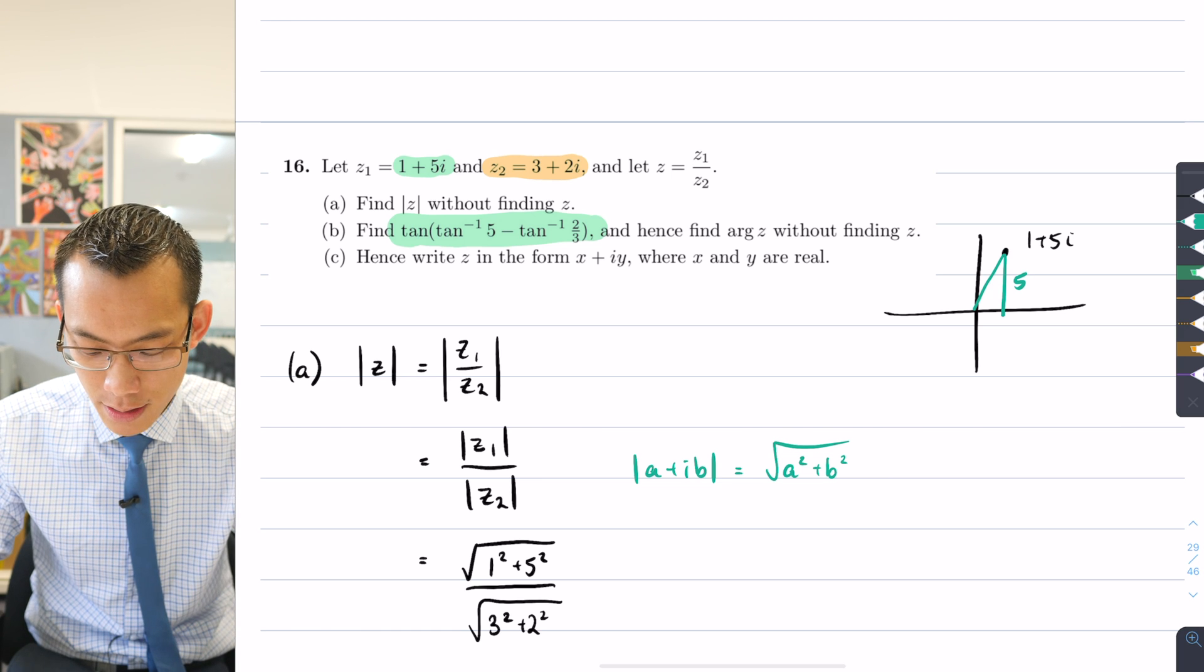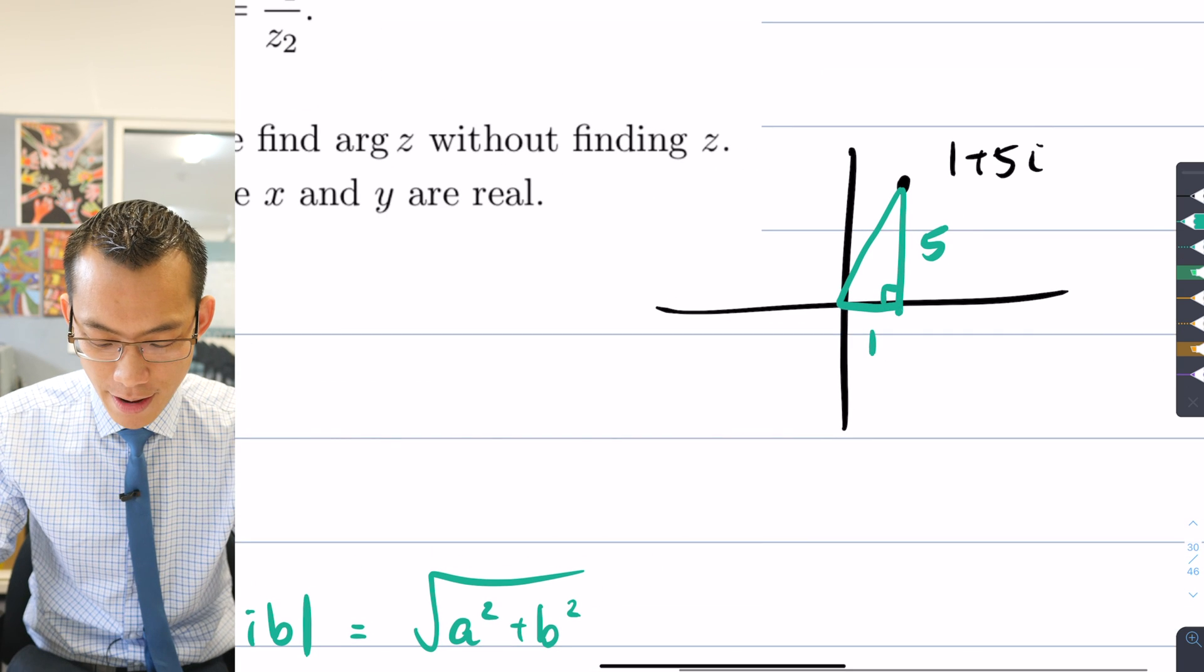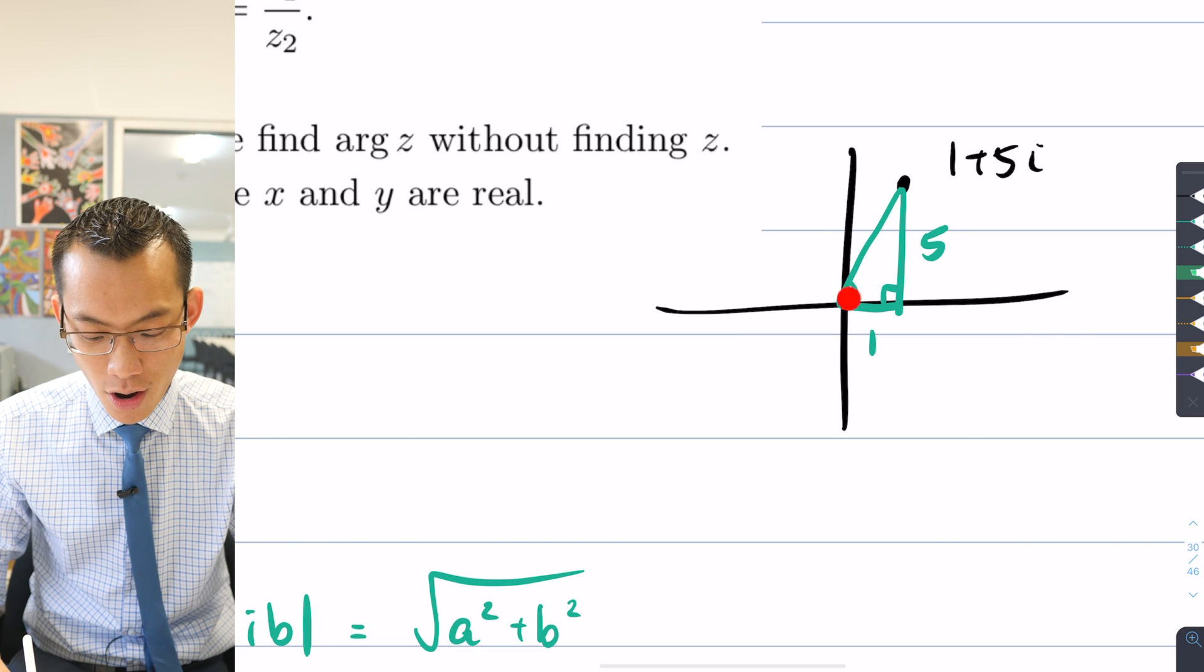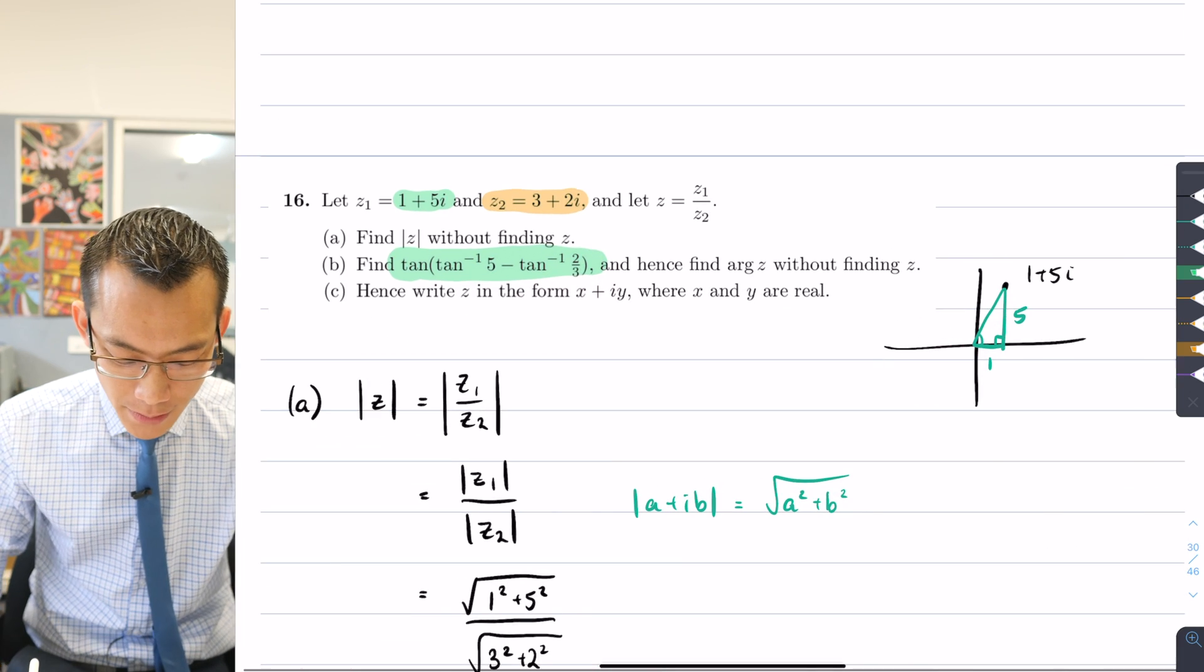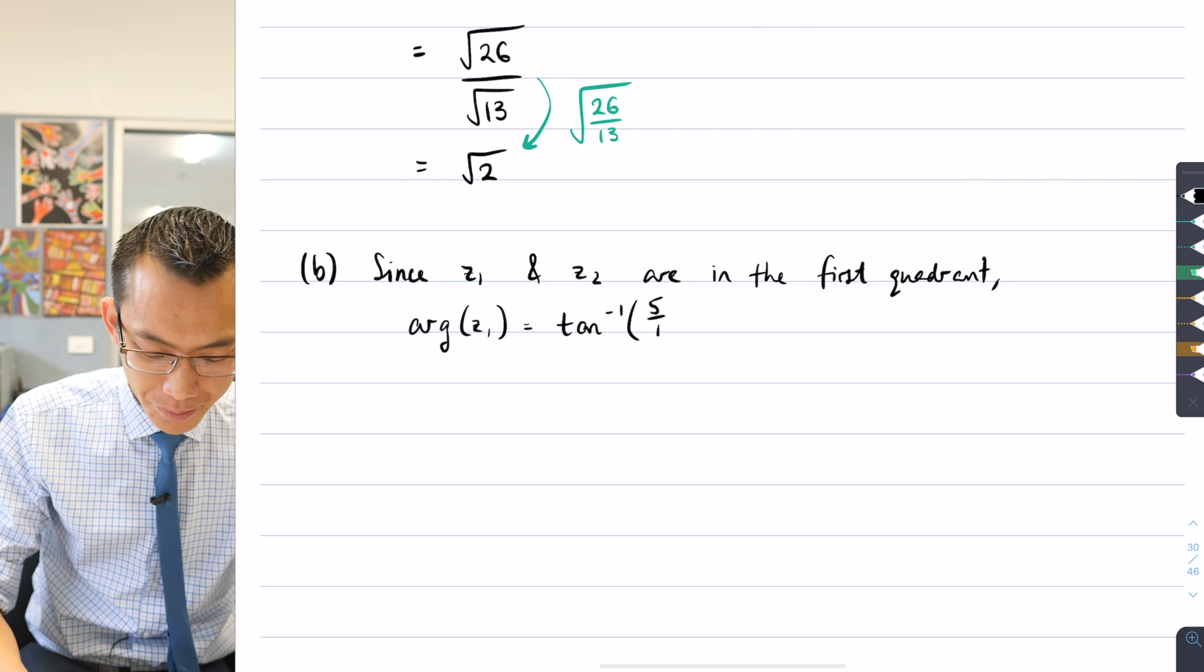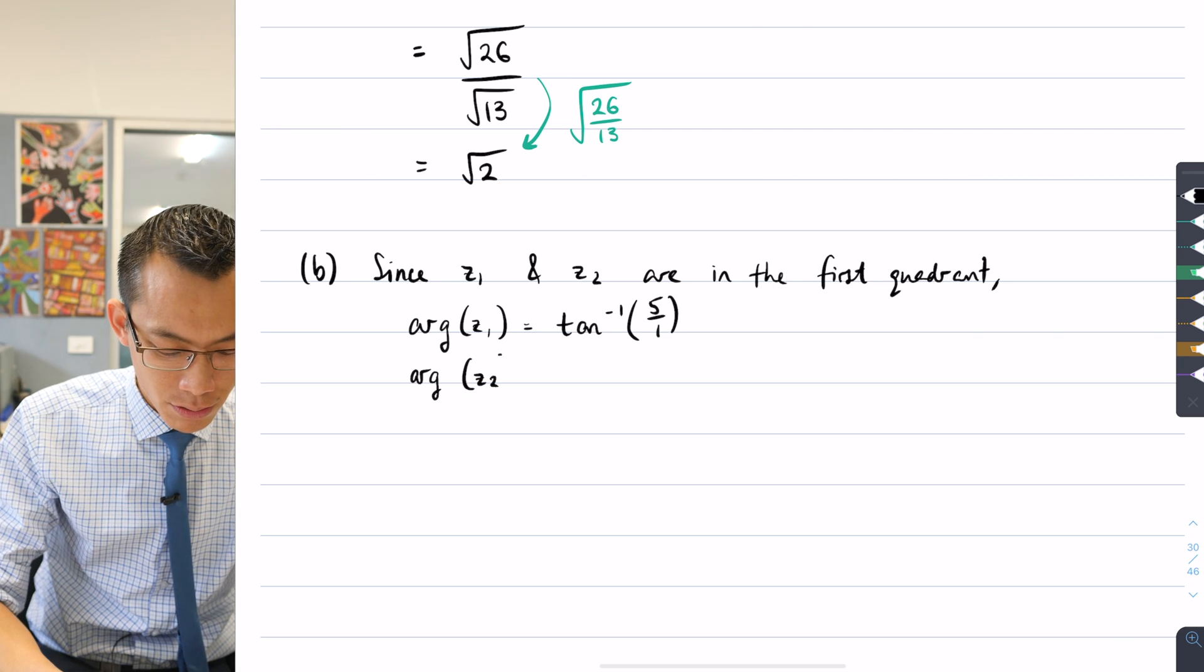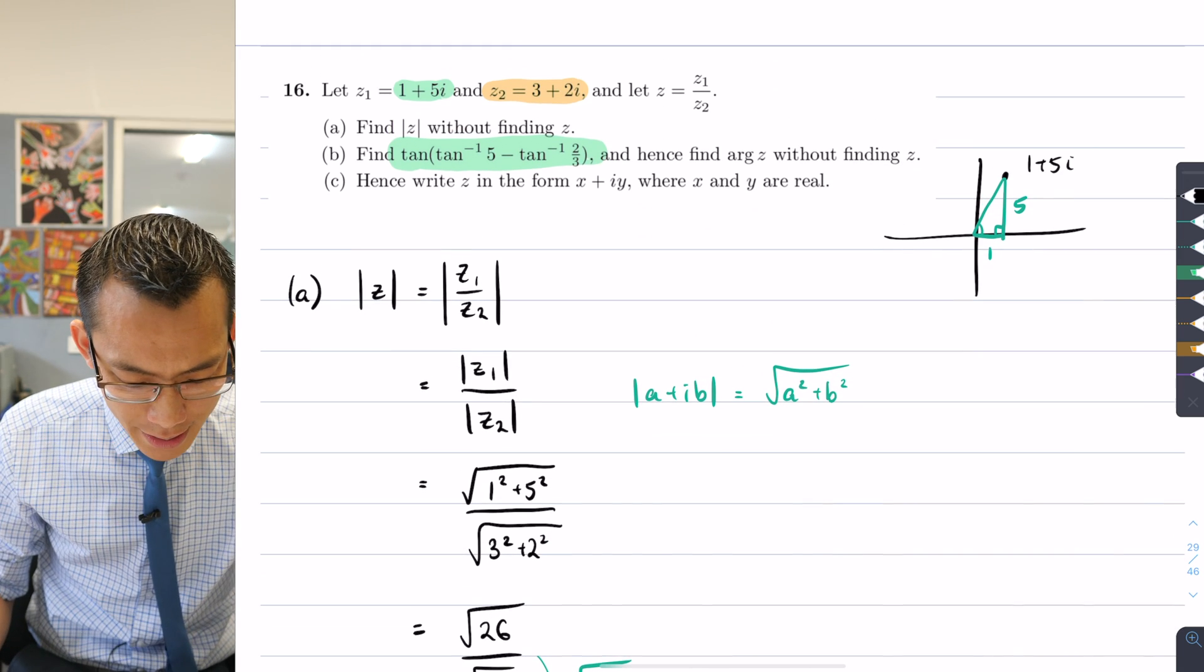You can see if this is my theta, then tan inverse of this angle will be 5 over 1, opposite on adjacent. Let's come back over here, so this is 5 over 1, which of course I'll simplify in a second. And arg of z2 is going to be tan inverse of 2 over 3—again, it's the y on the x.